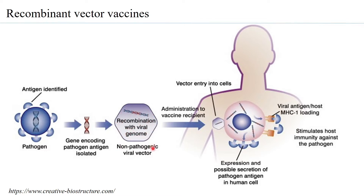The virus that is selected should be non-pathogenic to the host — that is important. Otherwise, instead of acting as a vaccine, the virus would cause disease in the host and act as an infectious agent. So the virus used as a vector should be one that is not infectious to the host. That is very important to take note of. This virus can then be administered into the human.